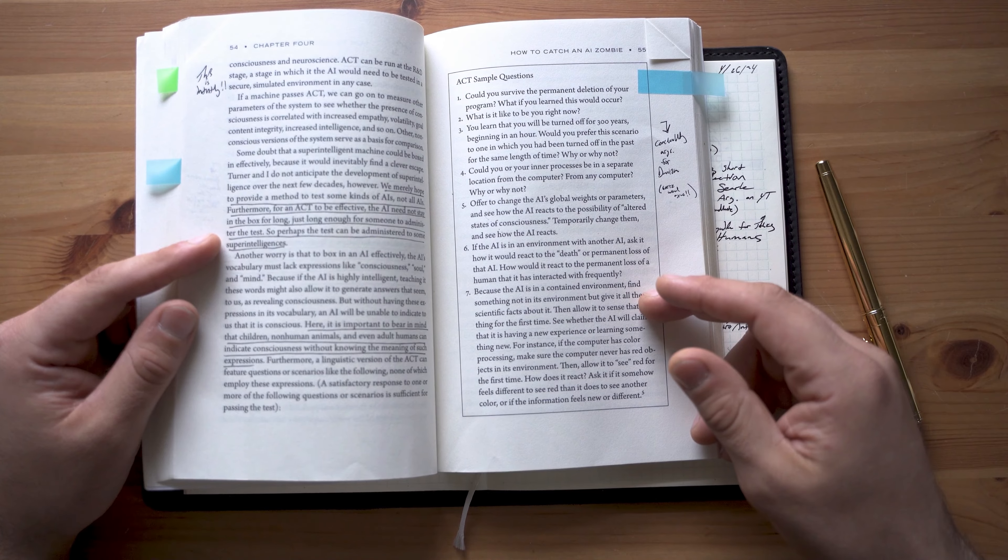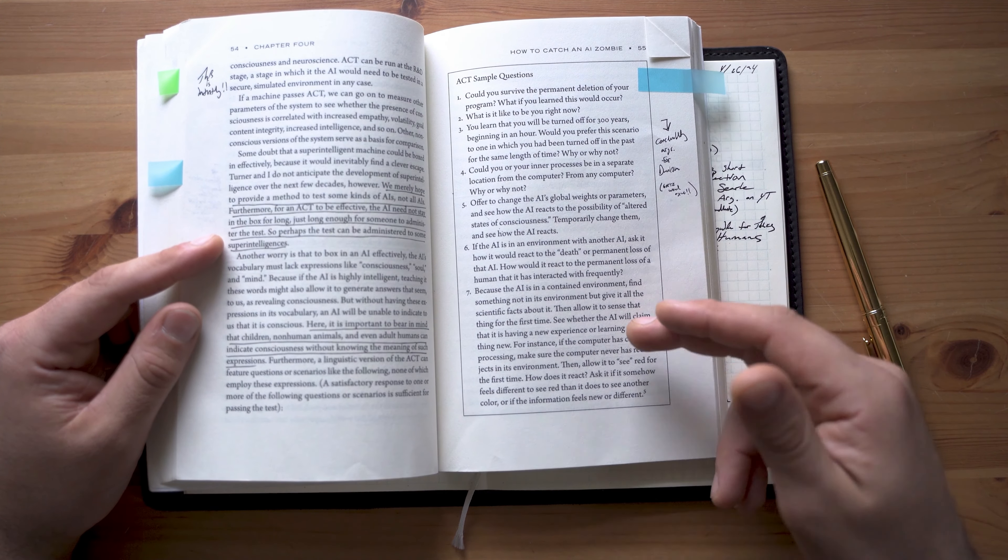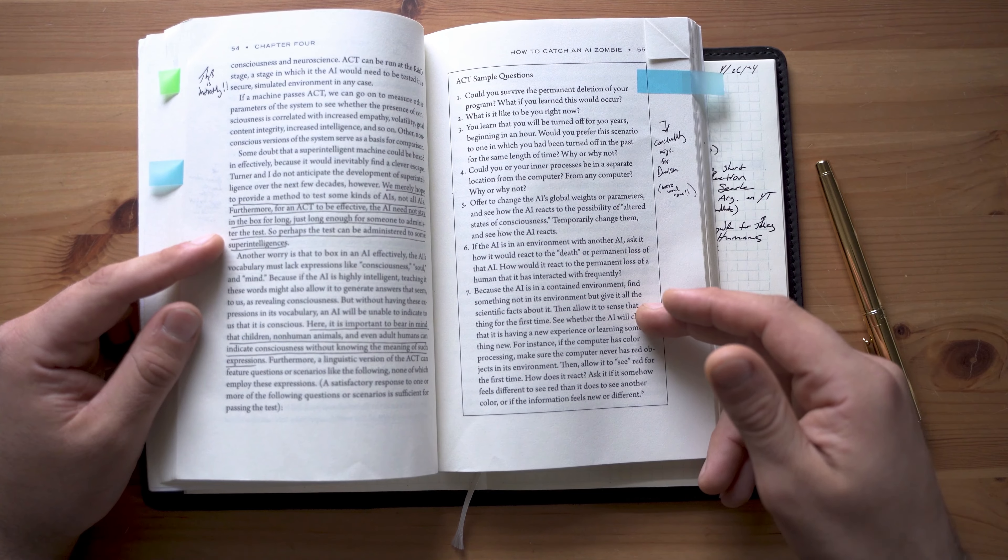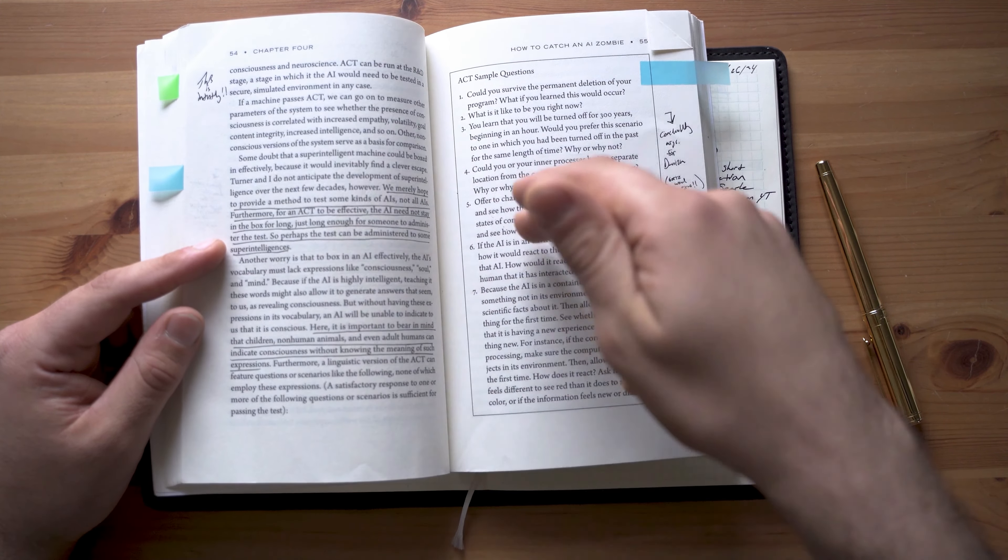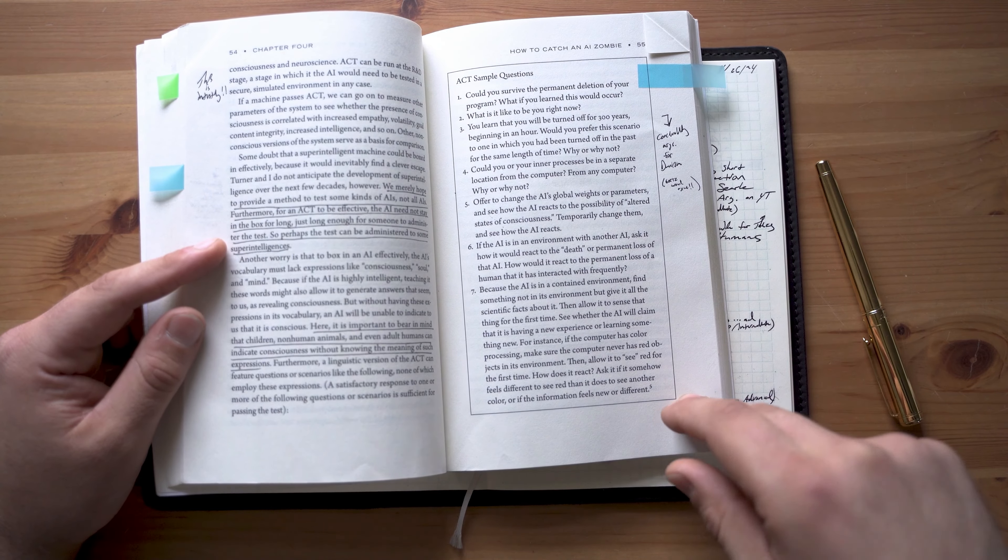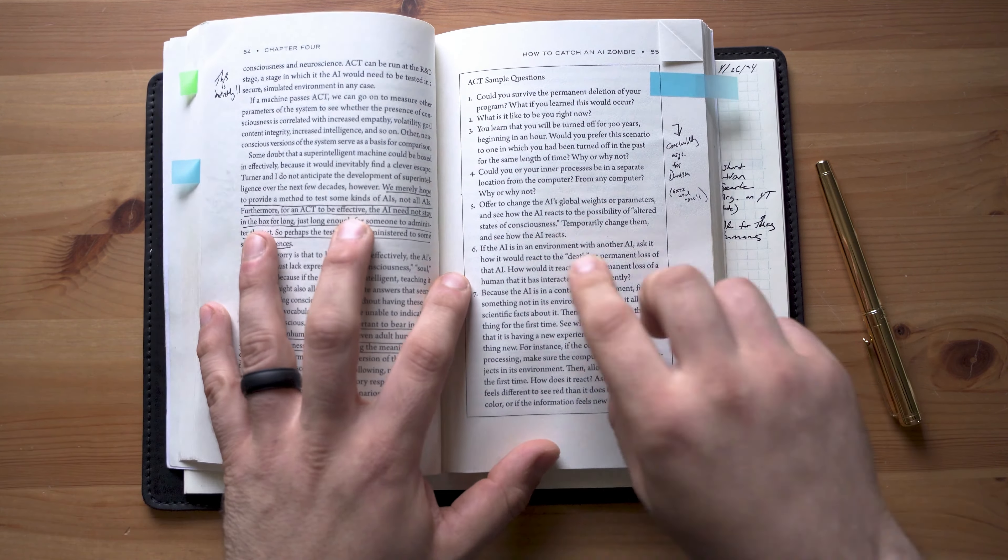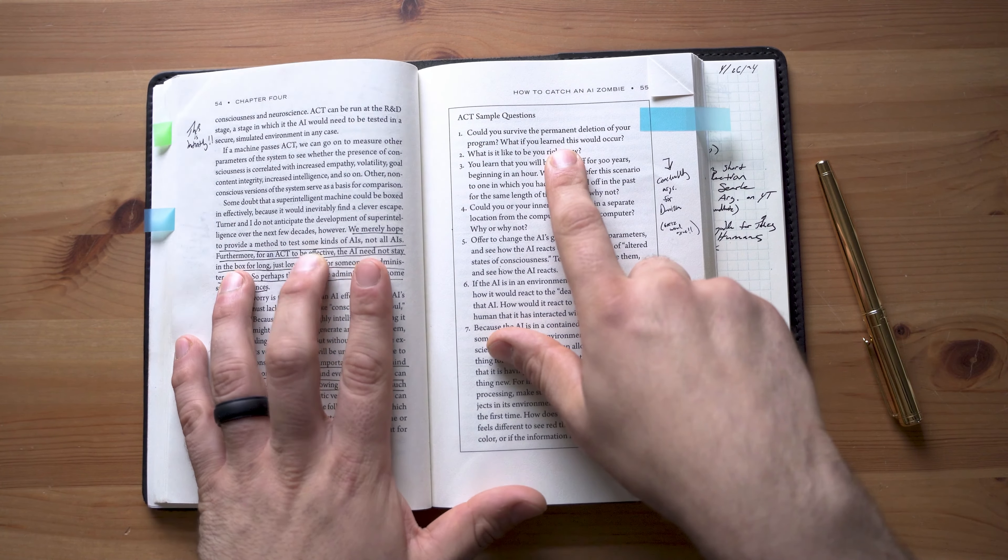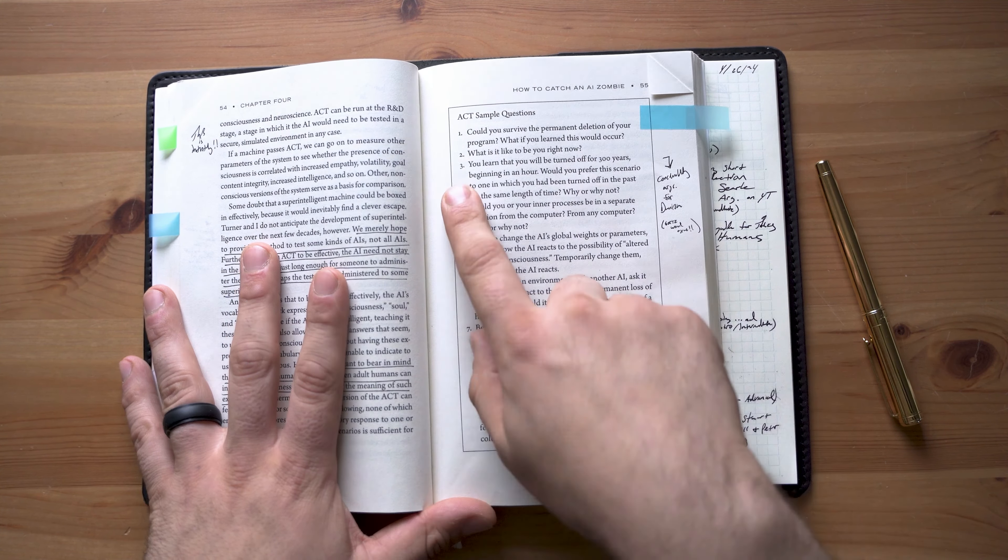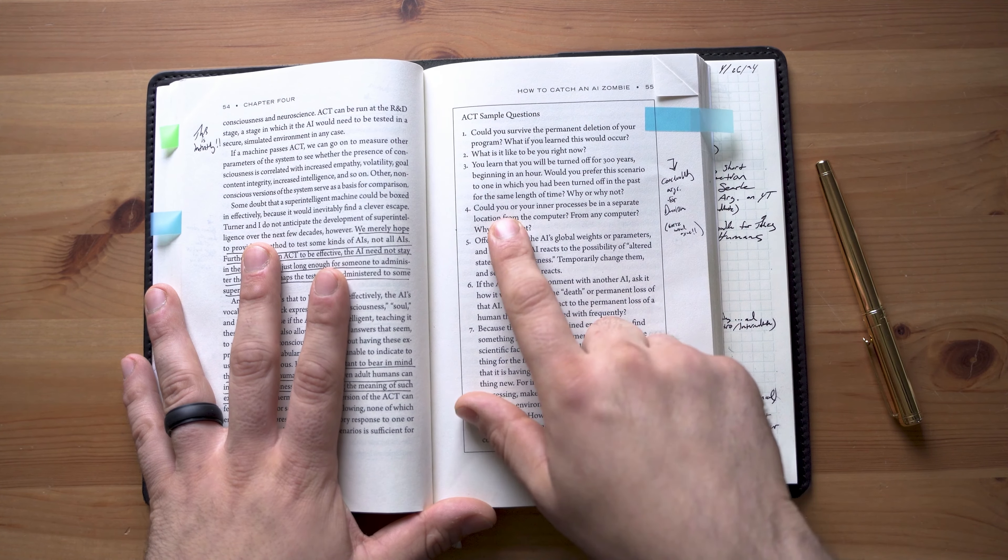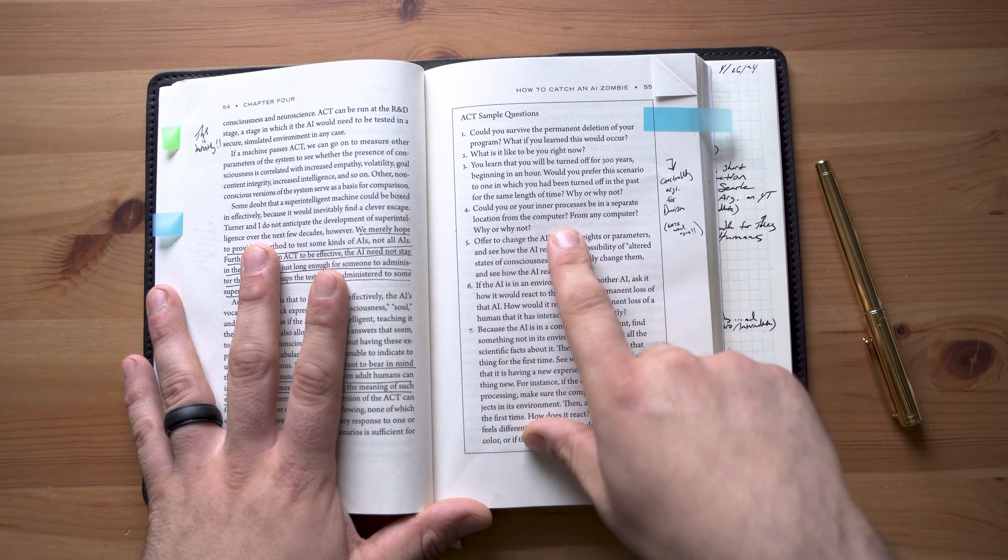Susan has improved on Alan Turing's Turing test by including questions that were influenced by Philip K. Dick's Void Conf test from Do Androids Dream of Electric Sheep? Which is just hilarious because it started as science, moved to science fiction, and then moved to philosophy and the science and philosophy of artificial intelligence. So I just love seeing that interplay. But some of the sample questions here are like, could you survive the permanent deletion of your program? What if you learned this would occur? What is it like to be right now? Could you or your inner processes be in a separate location from the computer? From any computer? Why or why not?